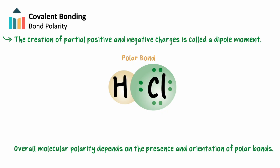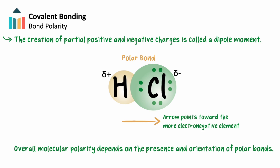In the case of the dipole formed in the hydrogen to chlorine bond, hydrogen becomes partially positive, shown as a delta plus, and chlorine becomes partially negative, shown as a delta minus. We can identify the direction of a dipole using an arrow that points toward the more electronegative element. A notch is added on the opposite side of the arrowhead, noting the less electronegative element and its partial positive charge. While individual bonds may be polar, polar bonds within molecules don't always cause an entire molecule to have a dipole moment. Instead, we'll have to consider both the presence and orientation of polar bonds within the molecule.